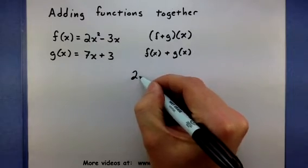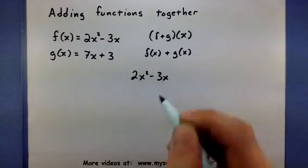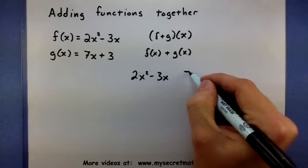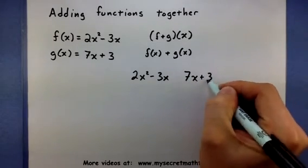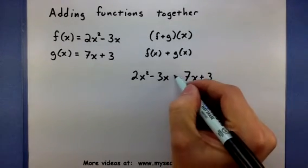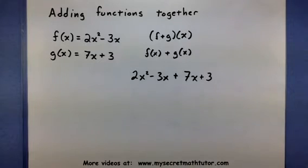So f is 2x squared minus 3x, and g is 7x plus 3, and of course, both these things are being added together. There we go. Now, keep in mind that after you take the two functions and write them down like that, you may be able to simplify them just a bit.